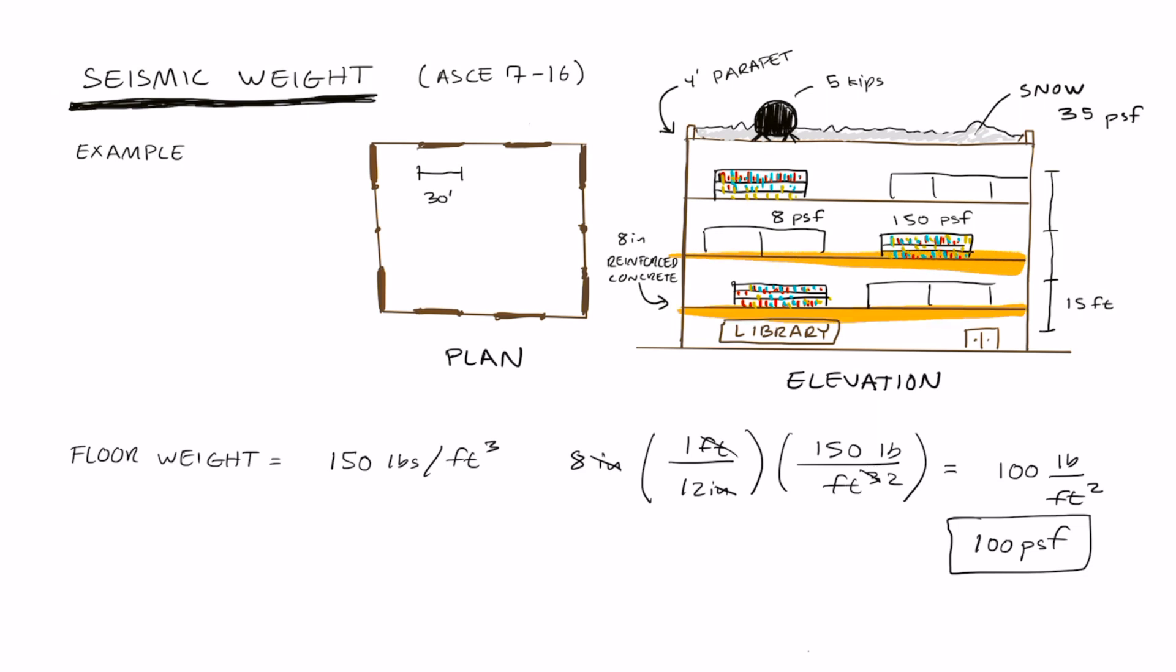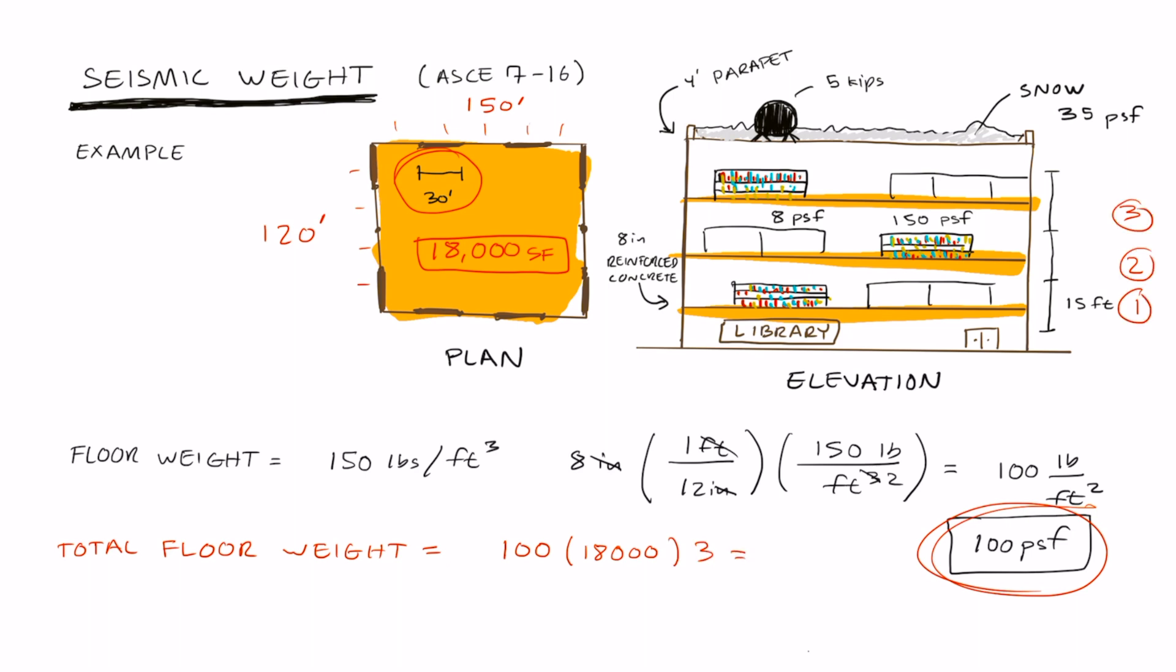Now we can find the total weight of all the concrete slabs or floors combined. For this building, we have three concrete slabs that we need to consider. Now we can find the area of each concrete slab. We know that each bay is 30 feet, so we could find the total area by adding the number of bays and multiplying length by width. 150 times 120 is 18,000 square feet. So now we can find the total weight of all of the concrete slabs by multiplying 100 times 18,000 by 3. We get 5,400 kips for the concrete slabs.